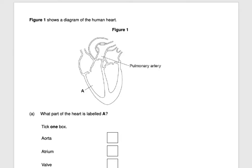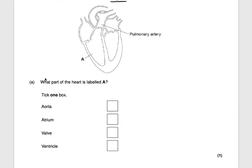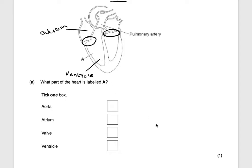Welcome to our video on exam questions related to cell organization. Our first exam question shows a diagram of the human heart. What part of the heart is labeled A? Remember, we have the atrium at the top and the ventricle at the bottom, separated by a valve. So structure A is the ventricle, for one mark.